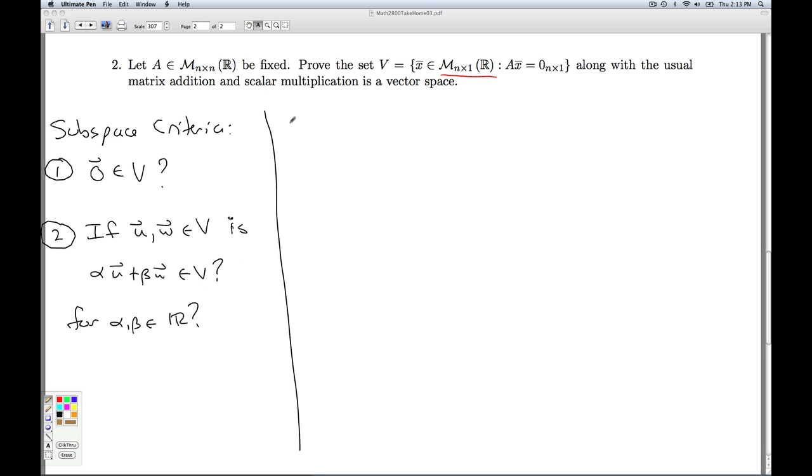Okay, so number one, the 0 vector in this vector space is the n by 1 zero matrix. So to check to see if it's in here, I need to pre-multiply it by the matrix A and show that I get the 0 matrix. Well, if I do that, from what we talked about on the first day of class or second day of class, any matrix times the n by 1 zero matrix, any n by n matrix times the 0 n by 1 matrix, it's going to give you the 0 matrix. All right, so that shows that 0 is in there.